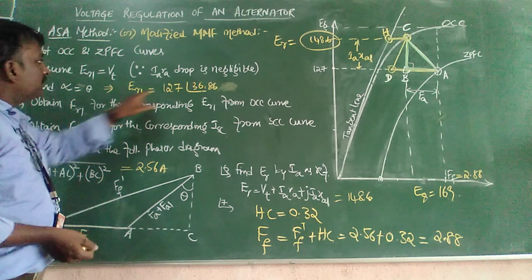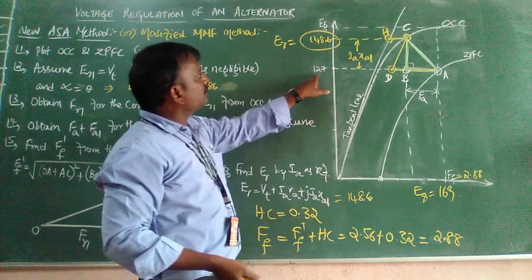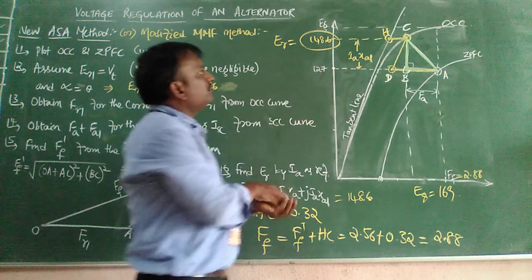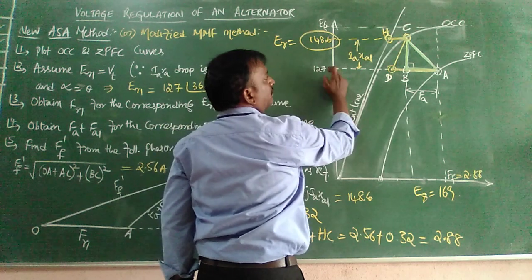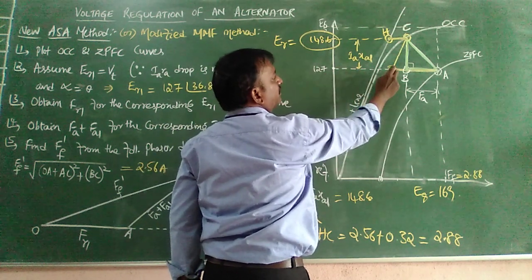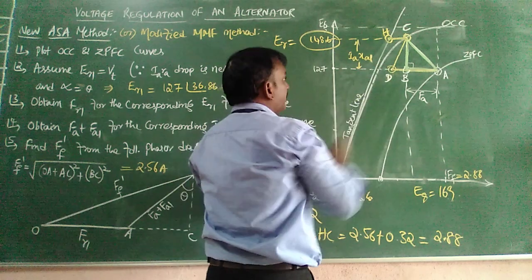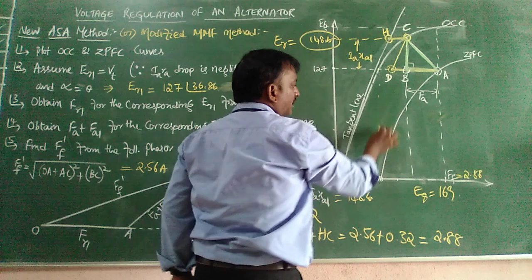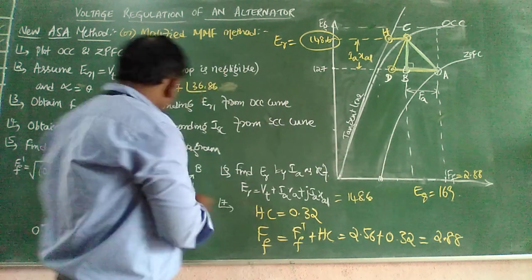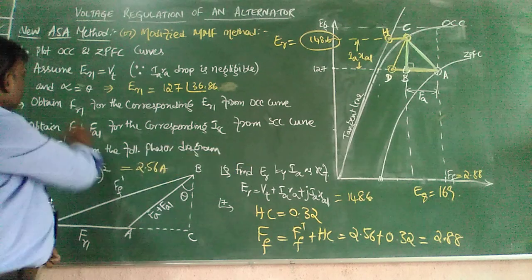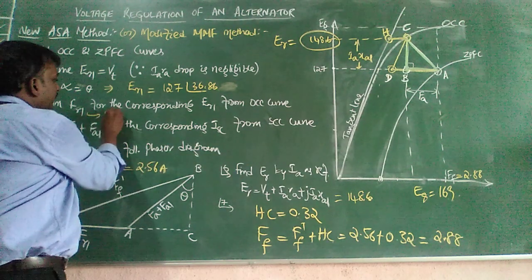Take the magnitude, 127, and come to the graph. Find out 127 on the Y-axis, make a dotted line, and from this 127 it touches the OCC curve at a point. Now obtain the corresponding FR1 from the X-axis. We find that the FR1 value is 1.6 something.